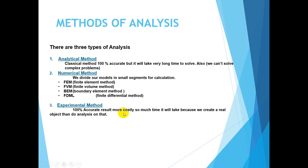The third method is the experimental method. It is also 100% accurate and the result is more closely related to the real problem, but it is very costly and time-consuming, because in this method we create a real object to do analysis on it. So for complex problems, engineers use numerical methods — it is easier, less time-consuming, and economical.